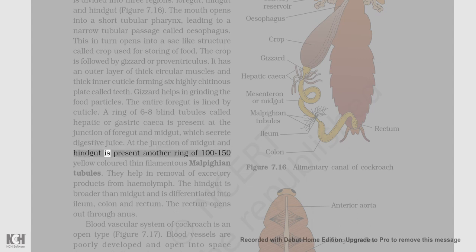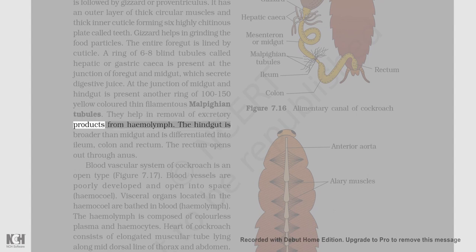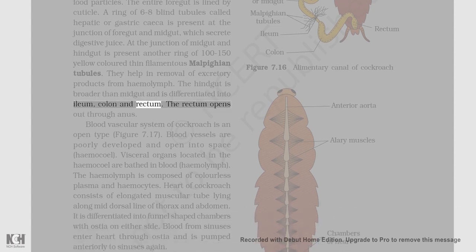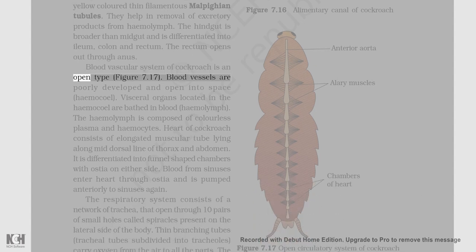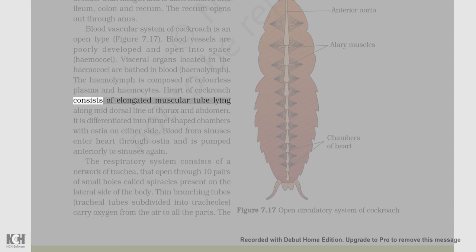At the junction of midgut and hindgut, there is another ring of 100 to 150 yellow-colored thin filamentous Malpighian tubules. They help in the removal of excretory products from hemolymph. The hindgut is broader than the midgut and is differentiated into ileum, colon, and rectum. The rectum opens out through the anus. The blood vascular system of cockroach is an open type (figure 7.17). Blood vessels are poorly developed and open into spaces called hemocoel. Visceral organs located in the hemocoel are bathed in blood called hemolymph. The hemolymph is composed of colorless plasma and hemocytes.